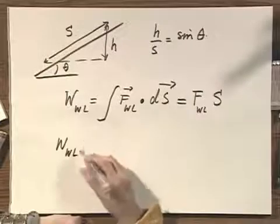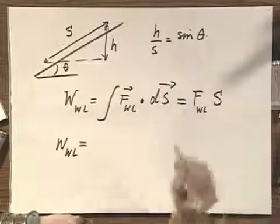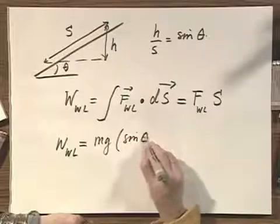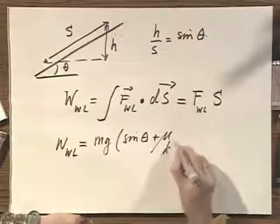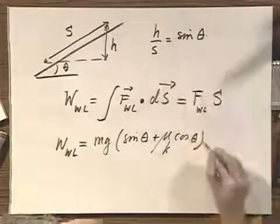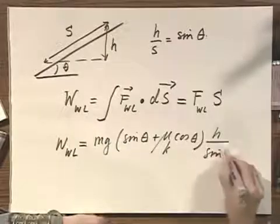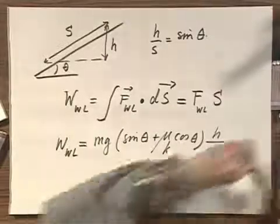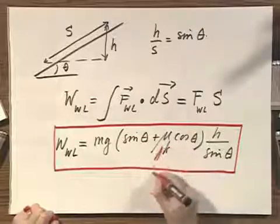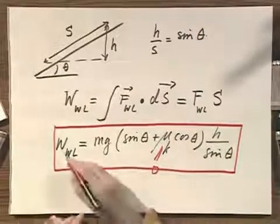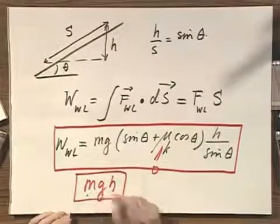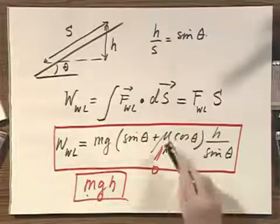So the work that Walter Lewin will have to do is the force by Walter Lewin — which we already calculated — which is mg times the sine of theta plus mu k times the cosine of theta, multiplied by s equals h divided by sine theta. So this is the total work that I have to do. It's always nice to check that you get a trivial answer if you take all the friction out. If you make mu k zero, then you get that the work that Walter Lewin has to do equals mgh — the famous equation. That's always the work you have to do if there is no friction.